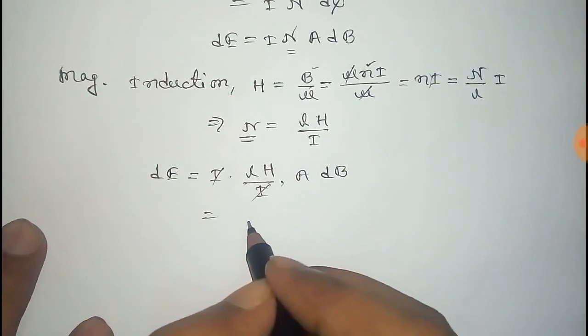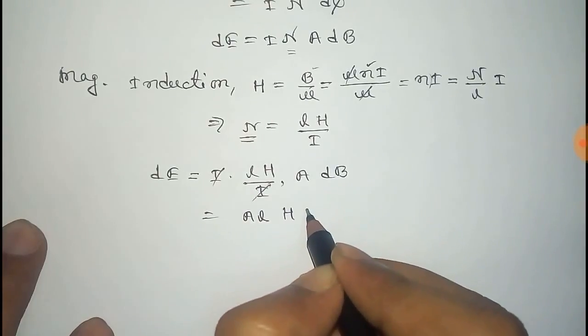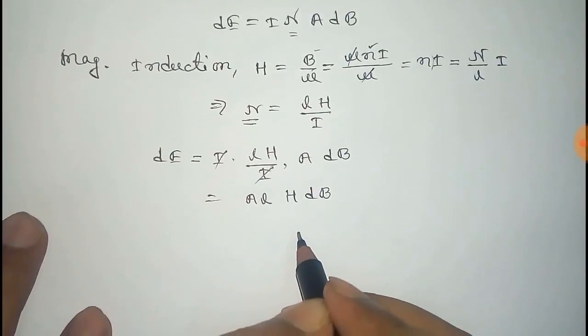So we get dE equals I times L H by I into A dB. And there I and I cancel out, and remaining is A L into H dB.